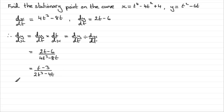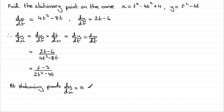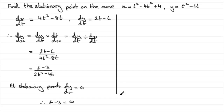At stationary points, dy by dx must equal 0. When you've got a fraction that must equal 0, the numerator will have to be 0, so t minus 3 must equal 0. That leads to t equaling 3.